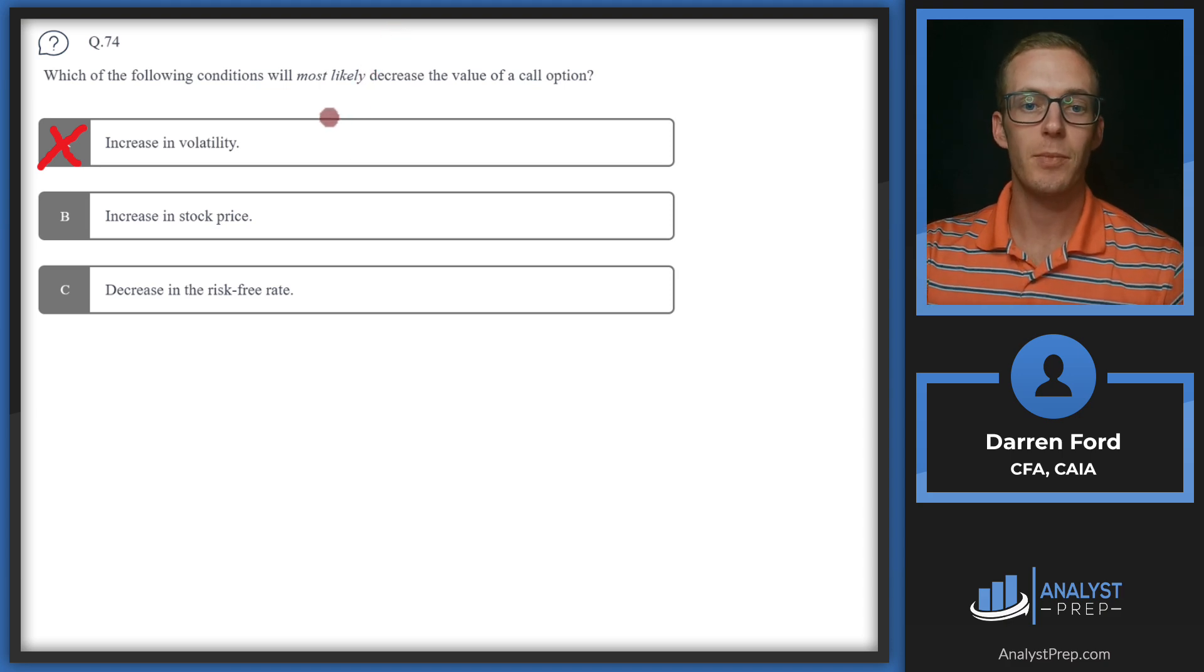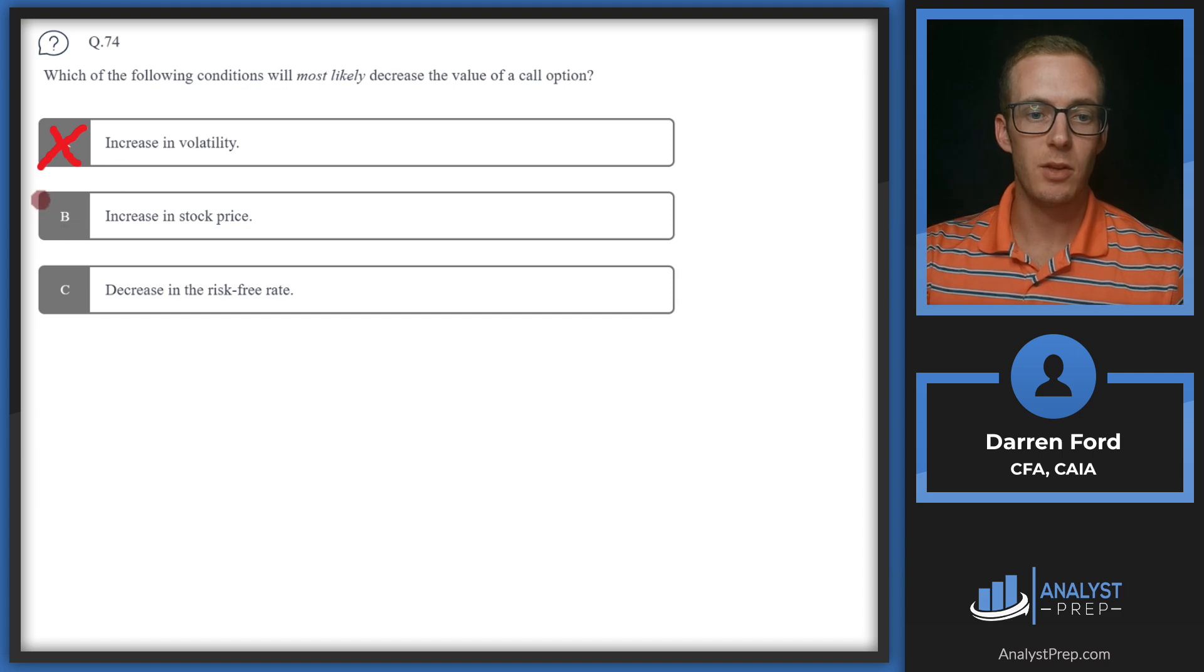B: Increase in stock price. This is also going to increase the value of a call option, not decrease it. The value of a call option is long the stock, so if the stock goes up, the value of the call also goes up.